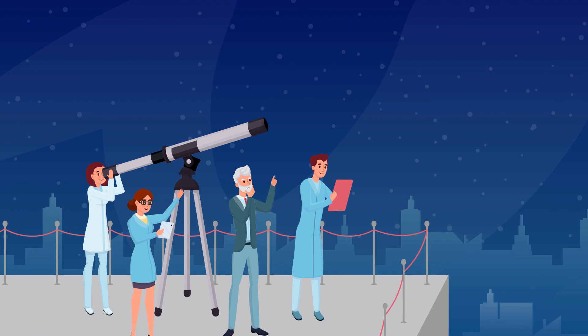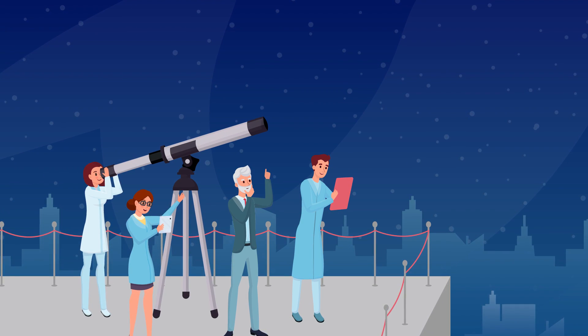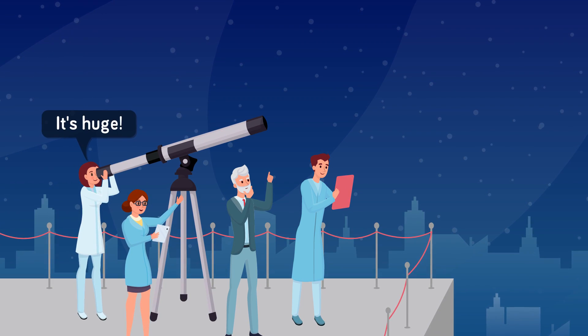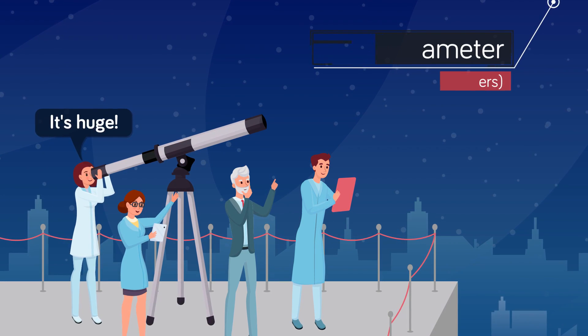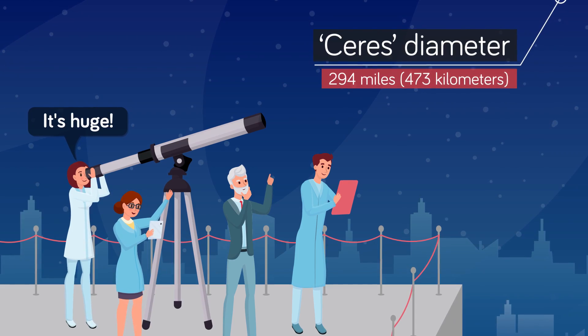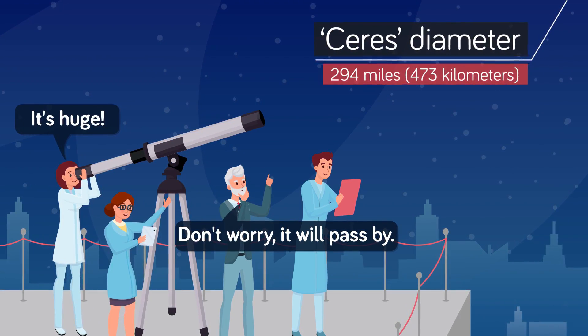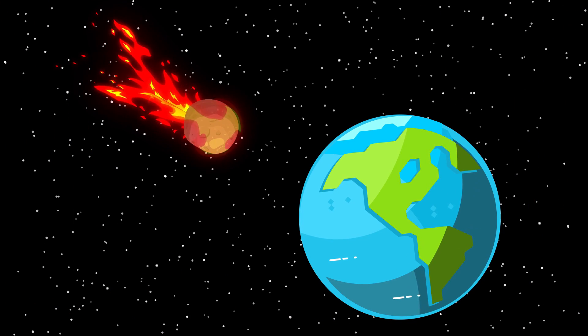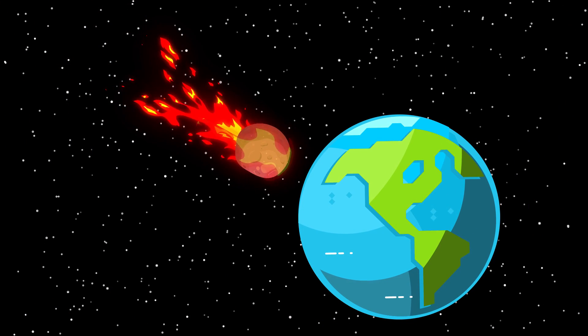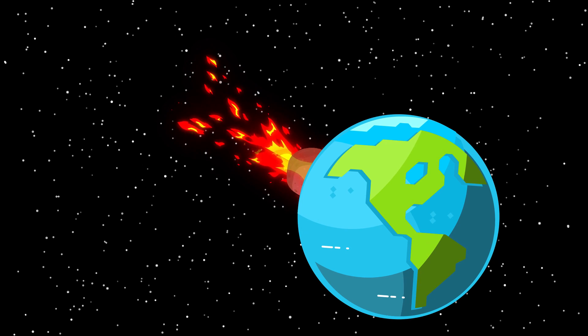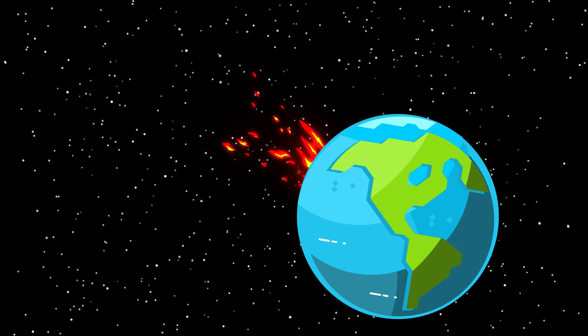The bad news is plenty of asteroids in this extinction-class still exist, rocketing all around space. The largest known asteroid, Ceres, is a whopping 294 miles in diameter, or almost 48 times larger than the size needed to end us. The good news is, sizable asteroids rarely collide with the Earth, only once every 160,000 years, according to NASA scientists.